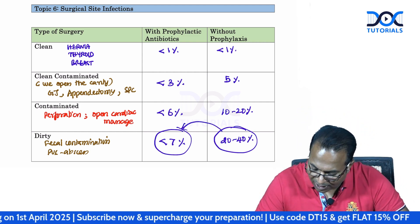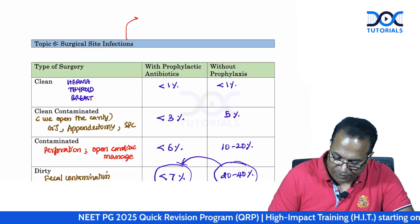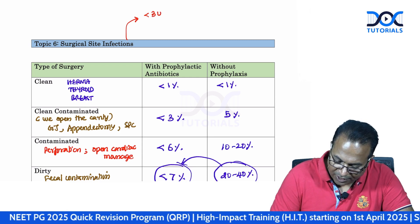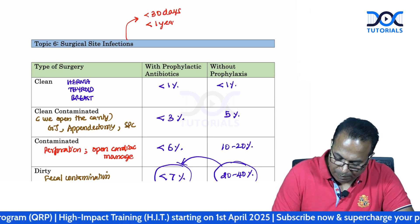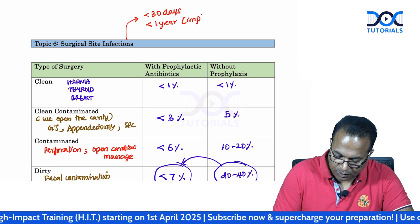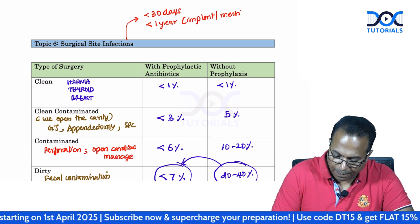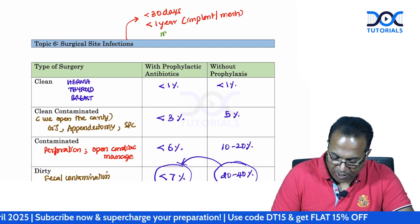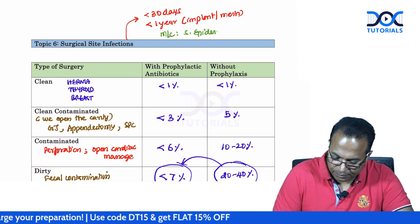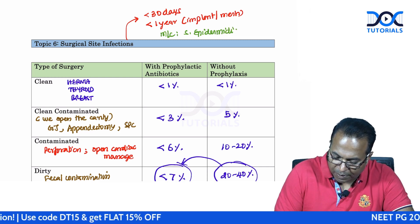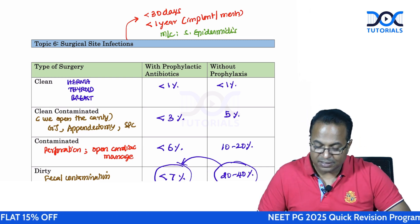Many scores are available for surgical site infection. Please remember that surgical site infection is an infection which happens up to 30 days, or up to 1 year if I place an implant or a mesh. The most common organism is Staph epidermidis, which is the normal organism on the skin.